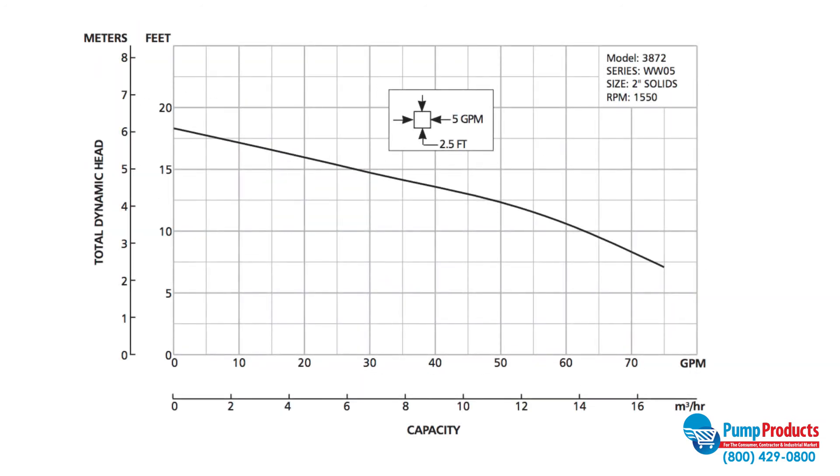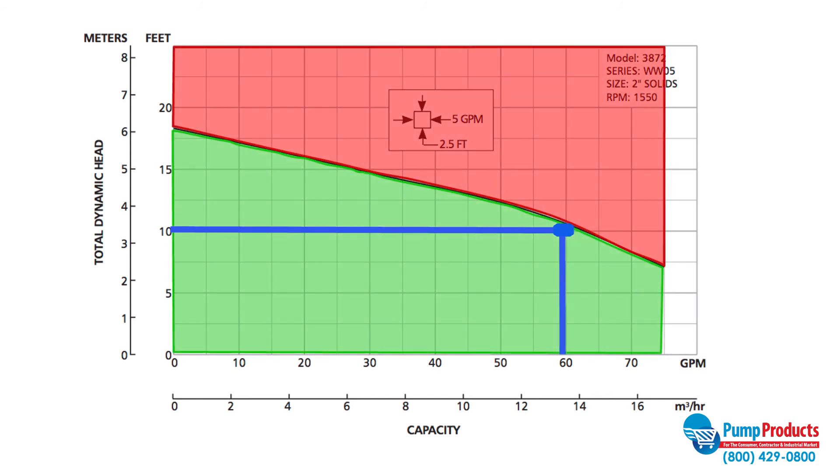Once you know the TDH and GPM your system requires, you can draw a line from each axis and create a point on the chart to represent your system requirements. Ideally, you want your point to fall on the curve as the curve represents the pump's optimal efficiency.